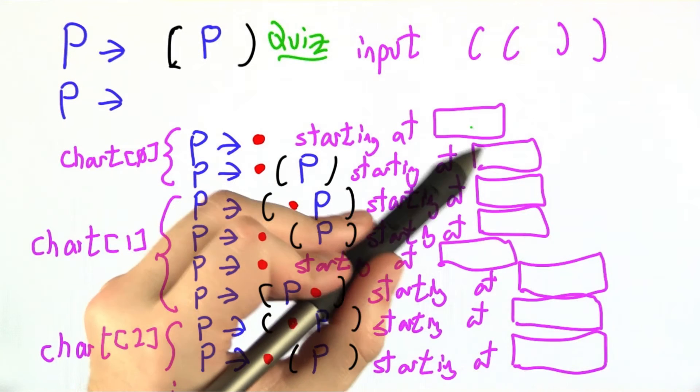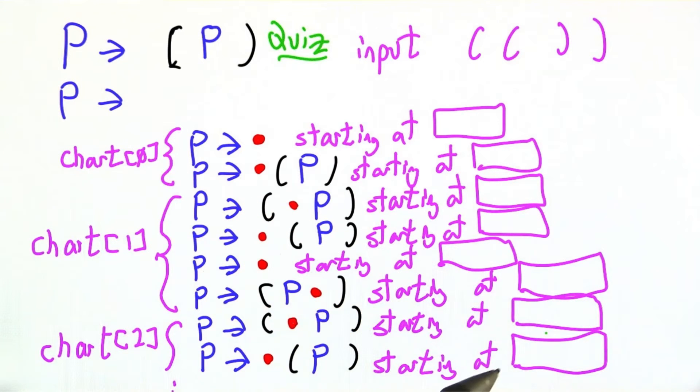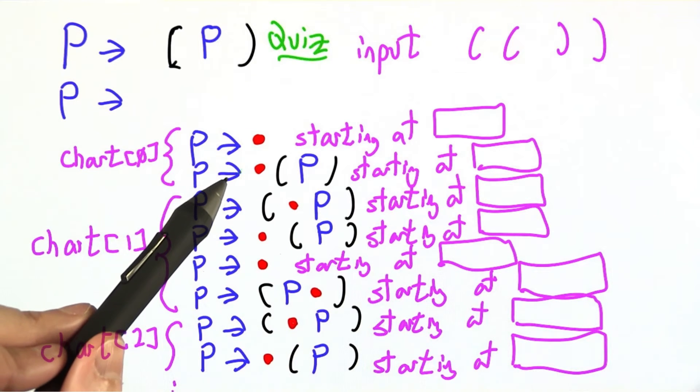So what I'd like you to do is fill in each one of these blanks with a single number corresponding to the chart position that this state conceptually starts at.